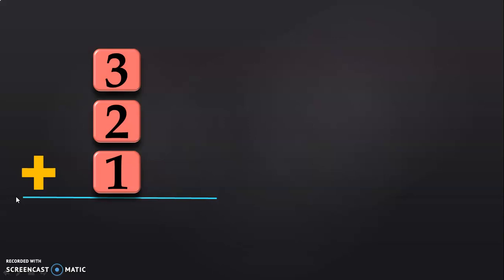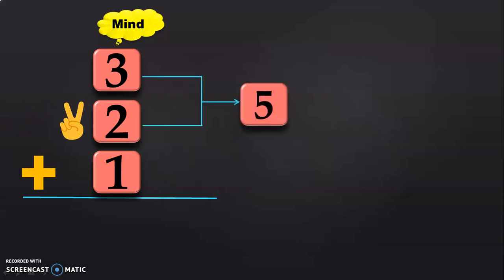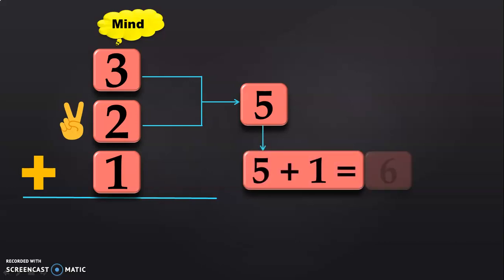First, we are going to add 3 plus 2 plus 1. Have 3 in the mind and 2 in the fingers. After 3, count 4, 5. Next, you will have to add 5 to the third number 1. 5 plus 1 will give you 6. We know that when 1 is added to any number, you will get the next number. This is one of the properties of addition.